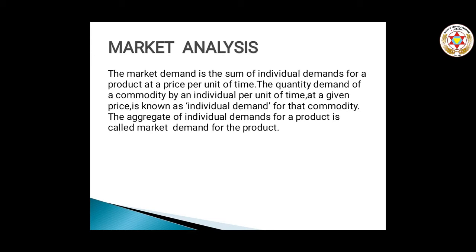The quantity demanded of a commodity by an individual per unit of time at a given price is known as individual demand for that commodity. The aggregate of individual demands for a product is called market demand. Thus the total quantity that all consumers or users of a commodity are willing to buy per unit of time at a given price, all other things remaining the same, is called market demand for that product.